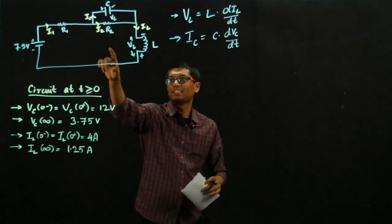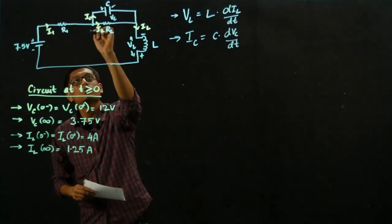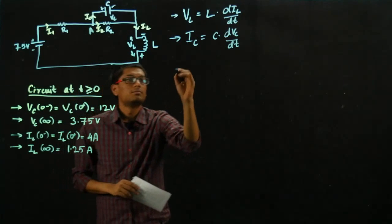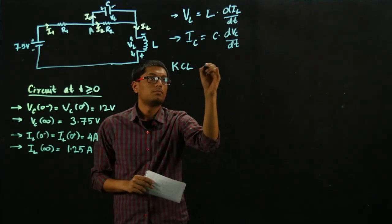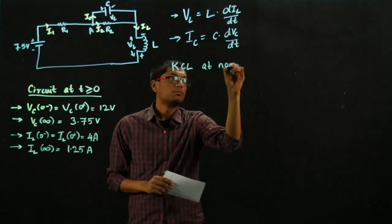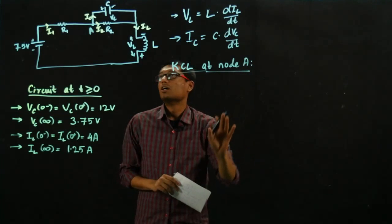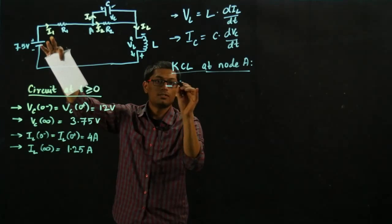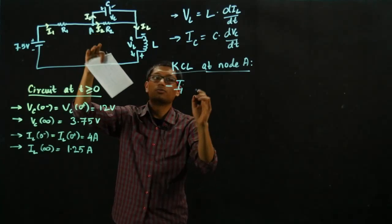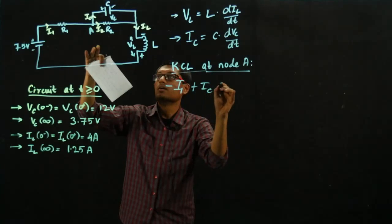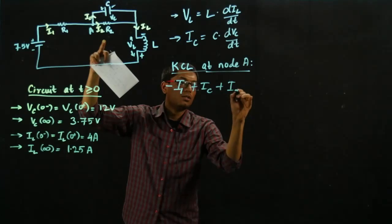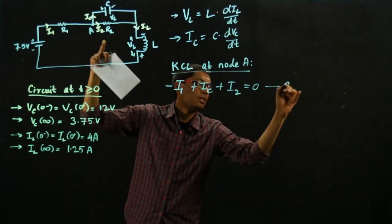Now, if I apply KCL at this node, let's call it node A. This would give me incoming current I1, outgoing current IC, and I2. The sum has to be zero. We'll call this A.